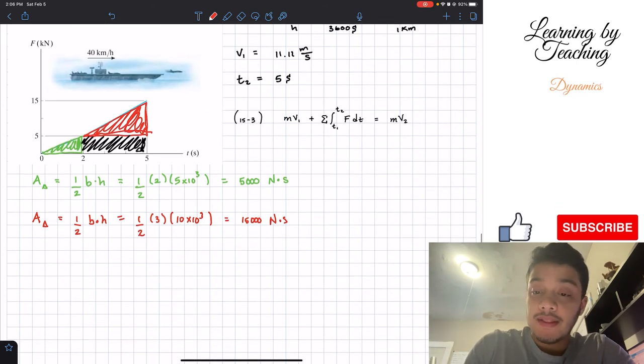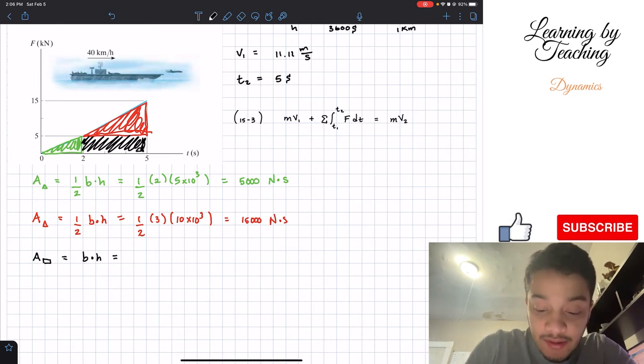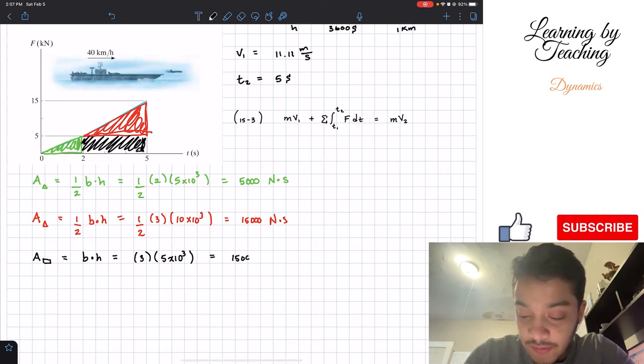And the last area that we need to find is the area of our rectangular shape. This should be the base times the height. We have that the base is equal to three again, but the height is equal to five times ten to the positive three. If we plug this into our calculator, we will also get 15,000 newtons times seconds.